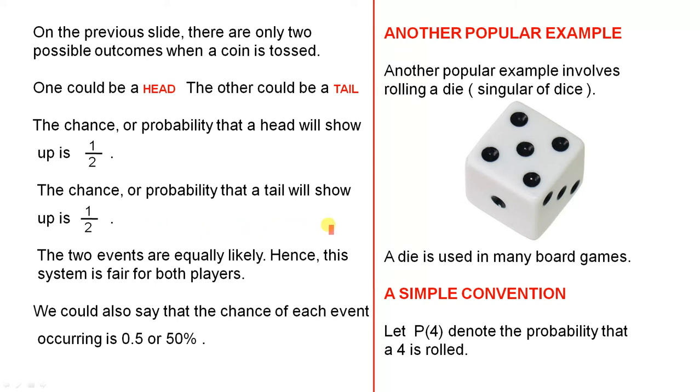The two events are equally likely. Hence, this system is fair for both players. We could also say that the chance of an event occurring is 0.5 or 50%. Of course, they're both equal to a half.